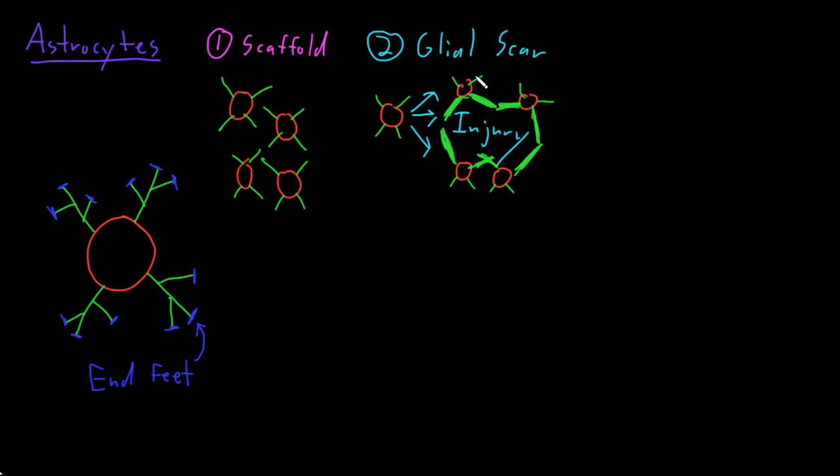The glial scar probably performs kind of a similar structural role to astrocytes' role as the general scaffolding for the central nervous system. Because probably what they're trying to do is wall off an injured area, and particularly if there's a cavity, if a hole has formed, they're trying to shore that area up with structural support from this wall. Another function of astrocytes is homeostasis.